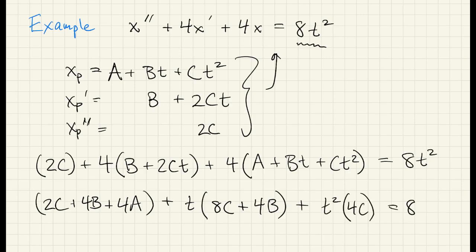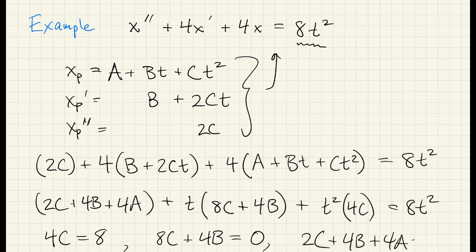This equation has to be an identity for all values of t. The only way that's possible is if the coefficients of different powers match on both sides. That tells us that the coefficient of t squared has to be 8. The coefficient of t on the left has to equal 0, which is the coefficient on the right. And the constant term on the left has to equal the constant term on the right, which is also 0.